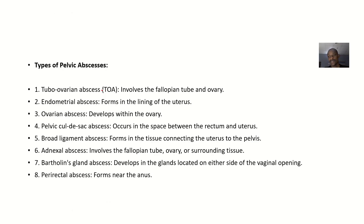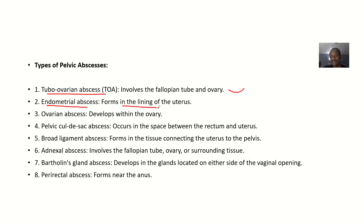Starting with the types: there is the tubal ovarian abscess, which is where you have abscess in the fallopian tube and in the ovaries. Then there is the endometrial abscess, which is a type of abscess that forms in the lining of the uterus. The ovarian abscess develops within the ovary. Then we have the pelvic cul-de-sac abscess, which occurs in the space between the rectum and the uterus.